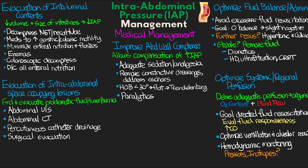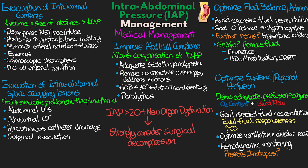We want to be using goal-directed fluid resuscitation, evaluating fluid responsiveness with the goal of ultimately increasing cardiac output. We also need to optimize ventilation and alveolar recruitment to ensure adequate optimization of oxygen delivery, and ensure hemodynamic monitoring to guide resuscitation efforts. Vasopressors and inotropes may be warranted to ensure adequate perfusion. If the intra-abdominal pressure ends up greater than 20 with new organ dysfunction or failure present, then we want to strongly consider surgical decompression. Those are the different overarching strategies for medical management of intra-abdominal pressure, hopefully decreasing that pressure and preventing progression to abdominal compartment syndrome.